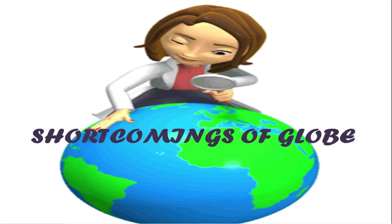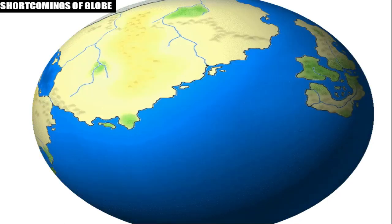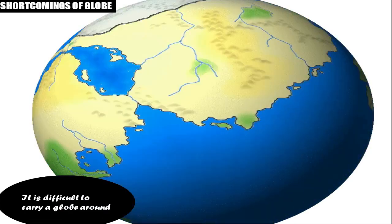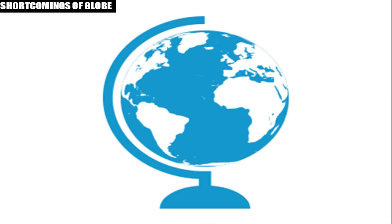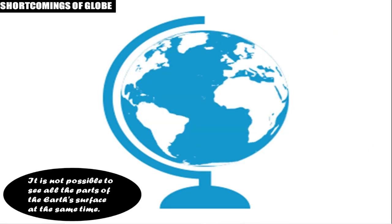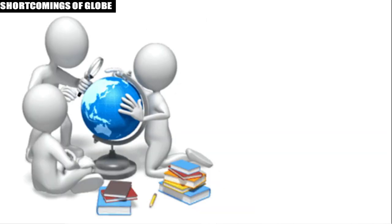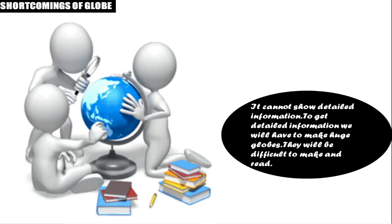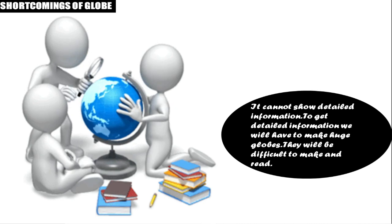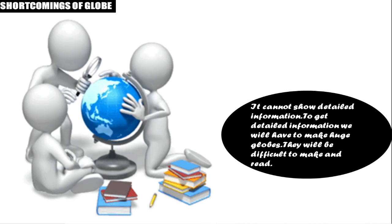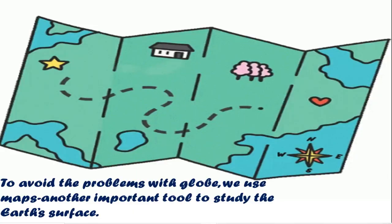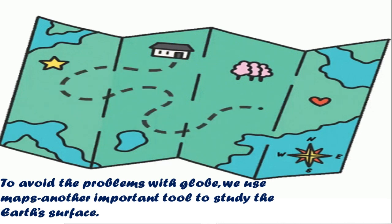A globe is very difficult to carry around because it is heavy and bulky. At a time, only one part of a globe can be seen, so it is not possible to see all parts of the earth's surface at once. A globe also cannot show detailed information of a place — making huge globes would be very difficult to make and read. To avoid these problems, we use maps.